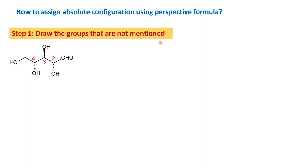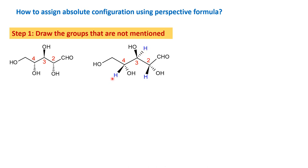The first step is to draw the groups that are not mentioned. I have put the structure with the group that is not mentioned. When carbon-carbon chains are written and a group is not mentioned, it is usually a hydrogen atom. In each of these cases, it is the hydrogen atom that is not mentioned. We see that carbon 2 and carbon 4 have broken wedges for the OH group, while carbon 3 has a solid wedge — so the unshown bond in carbon 3 will be a broken wedge for hydrogen.